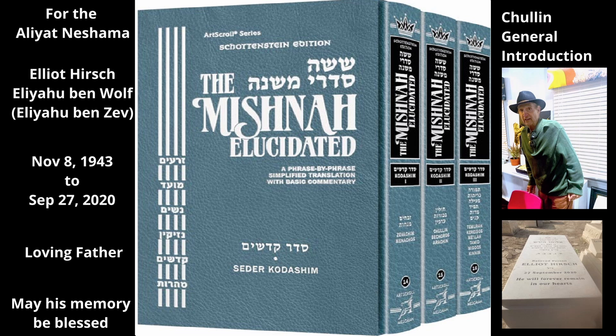Only the first two chapters deal with the laws of Shechita, slaughtering. Each of the other chapters discusses a different subject that is relevant to ordinary animals.